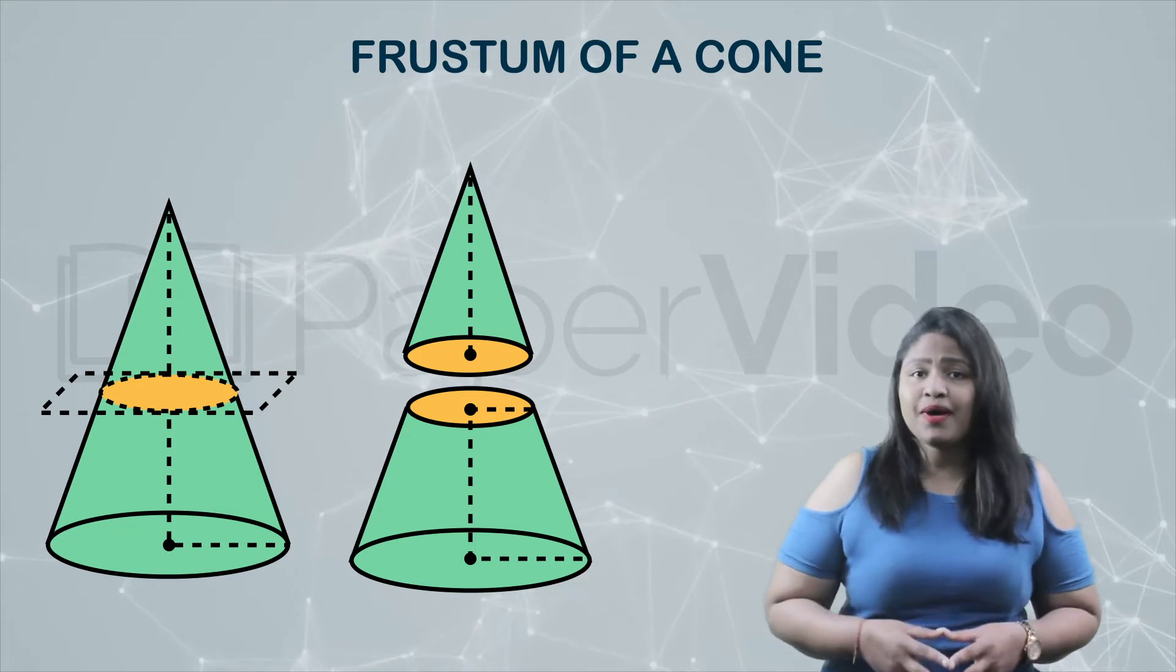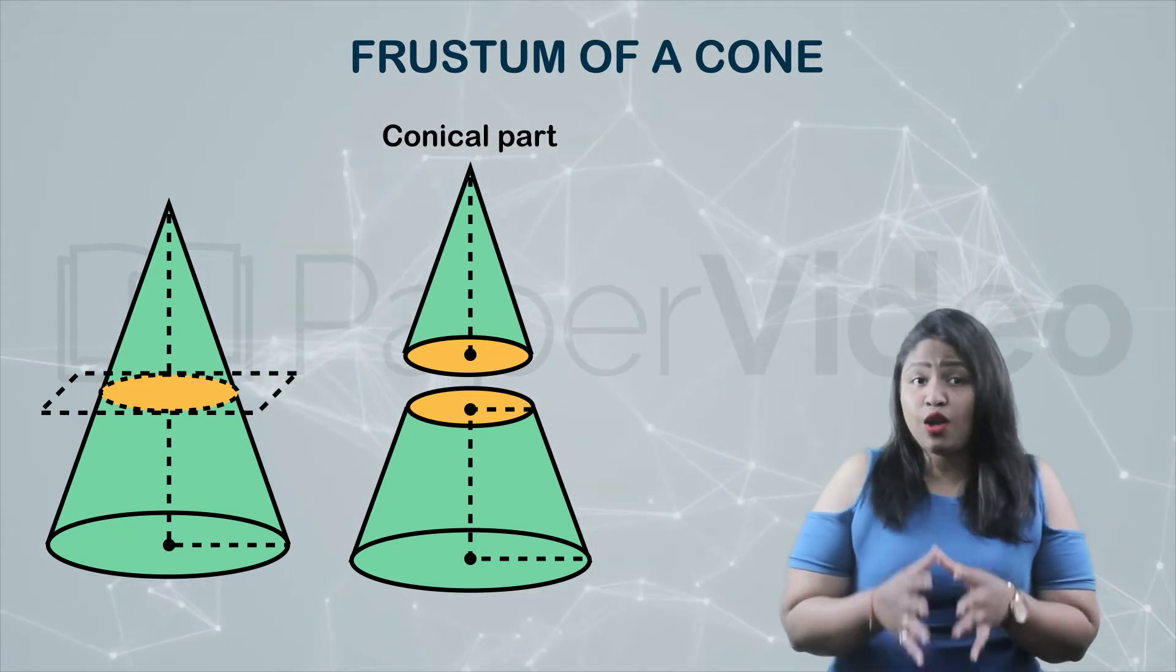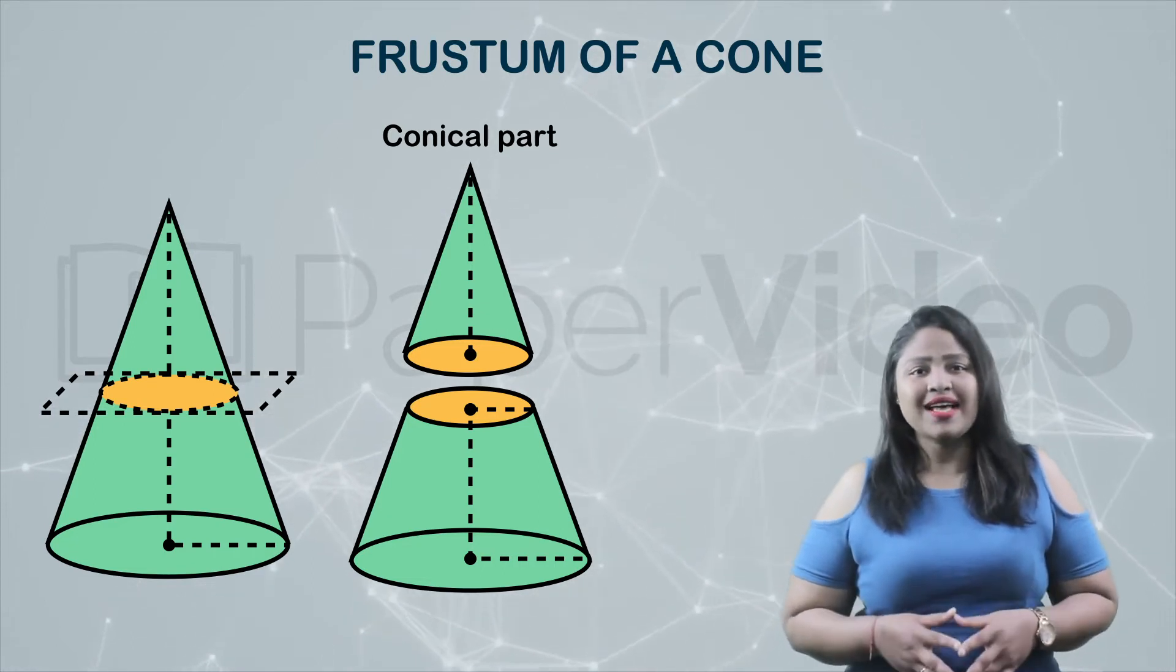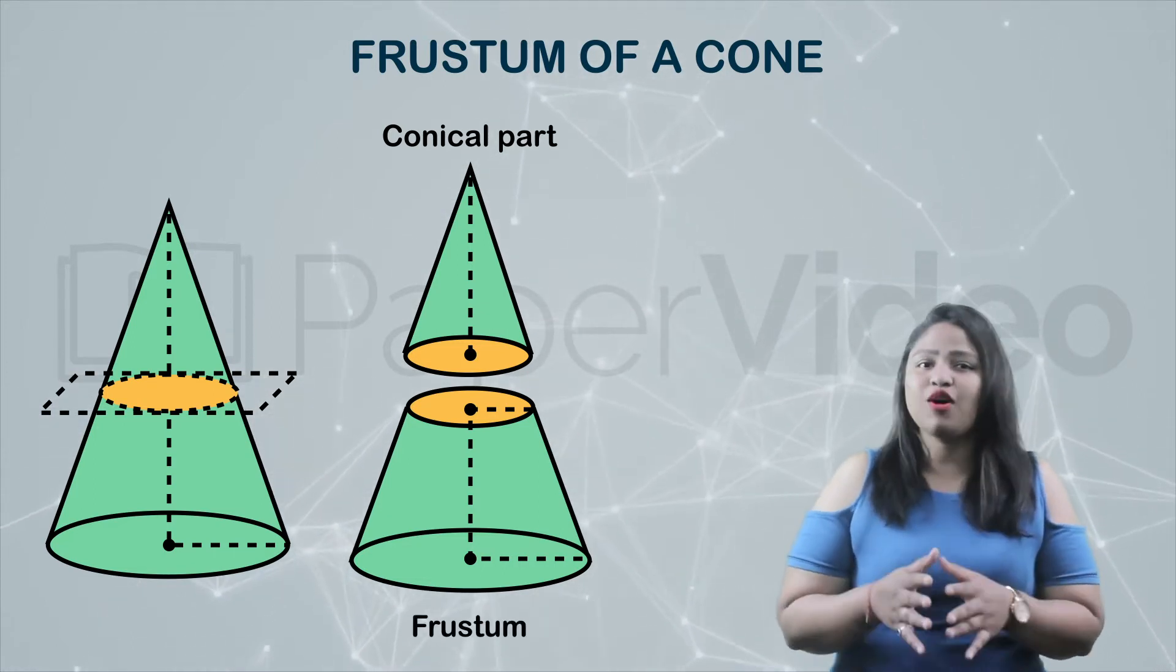Then the smaller part is known as the conical part because it looks like a cone, whereas a bigger part on the other side of the plane is called the frustum of the cone.